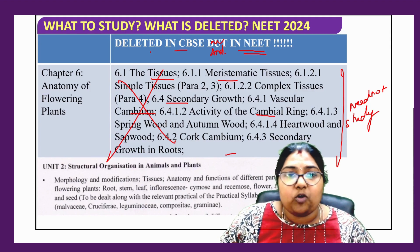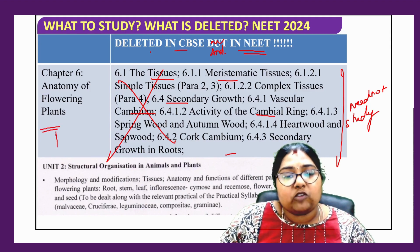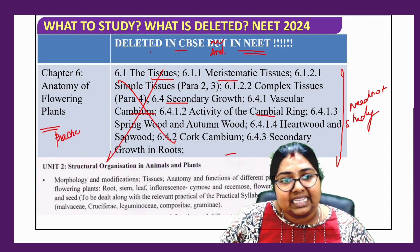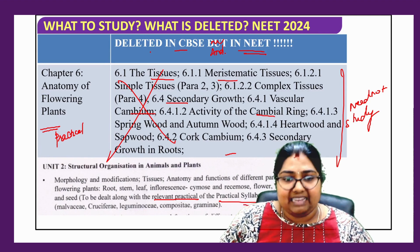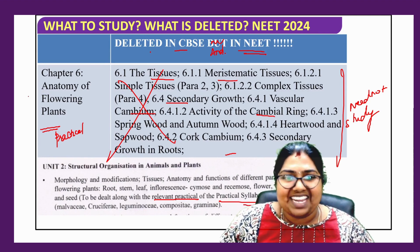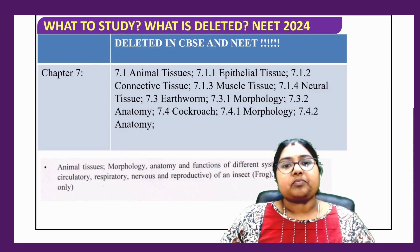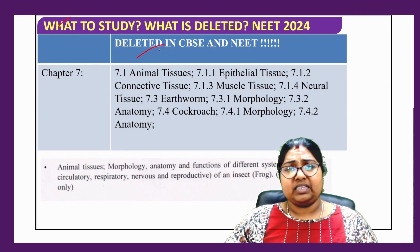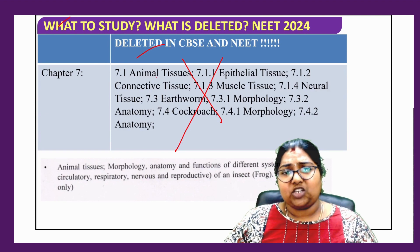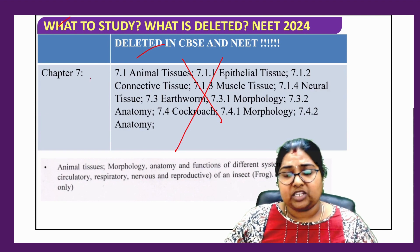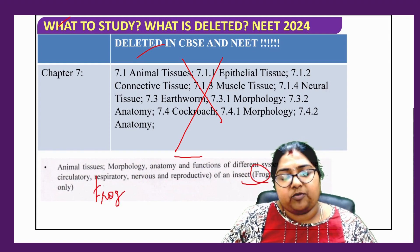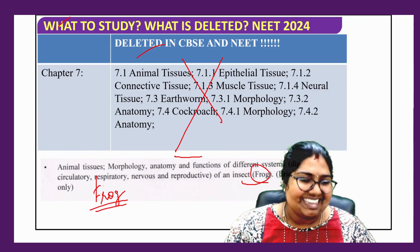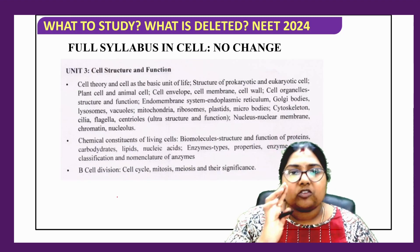One more important point regarding anatomy and morphology: you have to study the practical component, as it is dealt along with the relevant practical syllabus — a very important point, don't miss it. Regarding animal tissues: epithelial tissue, connective tissue, muscle tissue, neural tissue, earthworm morphology, and anatomy of cockroach — everything is deleted. Only frog remains; apart from frog you need not study anything else.